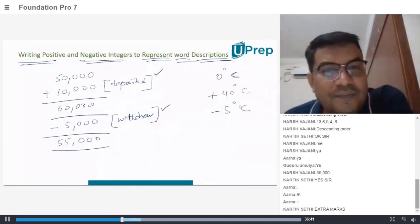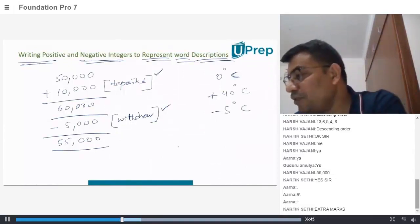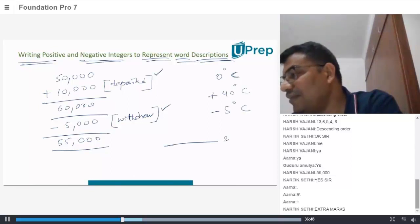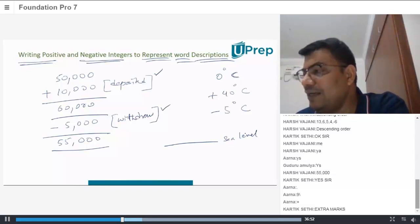We can even represent above the sea level, below the sea level. Yeah, that's a beautiful example about the sea level. So, if we have the sea level. Generally, you take sea level as 0.